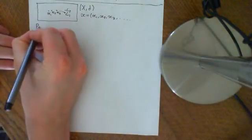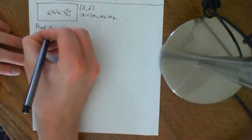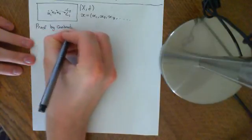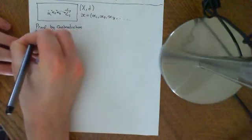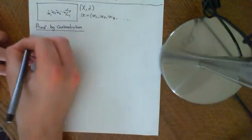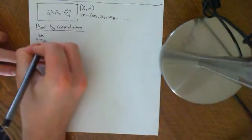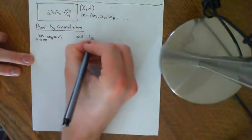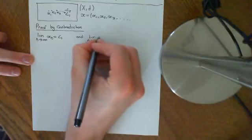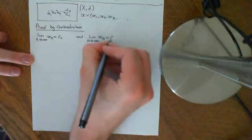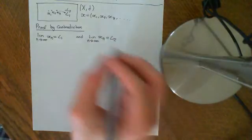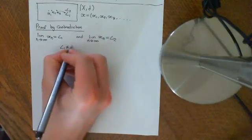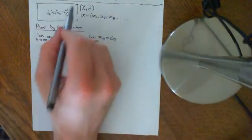We're going to prove this by proof by contradiction. Suppose it's possible that the sequence can converge to two things, and then we're going to derive an utterly ridiculous statement. So, suppose the limit as n approaches infinity of xn is equal to L1, and the limit as n approaches infinity of xn is equal to L2, in our arbitrary metric space. So the sequence has two limits, and L1 is not equal to L2 — they are distinct elements of the set big X.